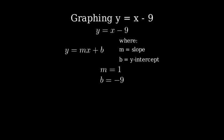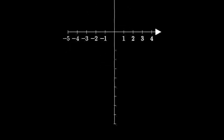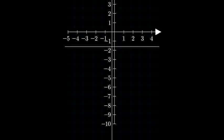Now, let's create our coordinate system. We'll make our axes large enough to show the y-intercept at negative 9. Adding grid lines will help us plot points more accurately.